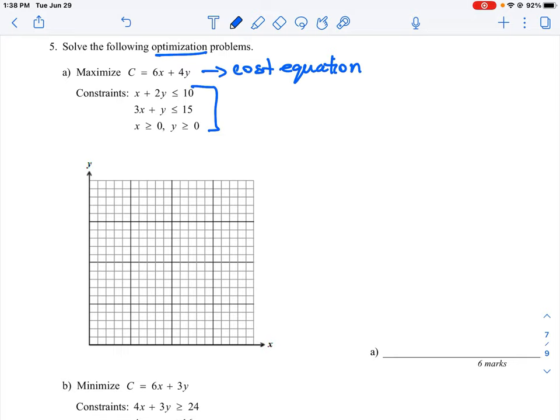In this question, we're going to plot these equations. We'll start by writing these in slope intercept form. So this is going to be 2y ≤ -x + 10, and then we divide by 2, so this is going to be y ≤ -1/2x + 5. That's our first equation. Our second equation is going to be y ≤ -3x + 15. And then we're given our two other equations: x ≥ 0 and y ≥ 0. Let's start plotting what we have here.